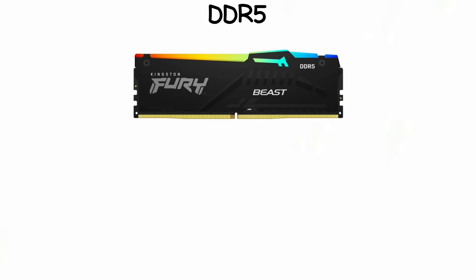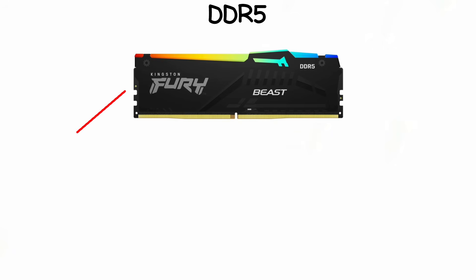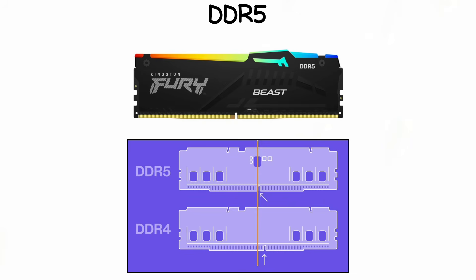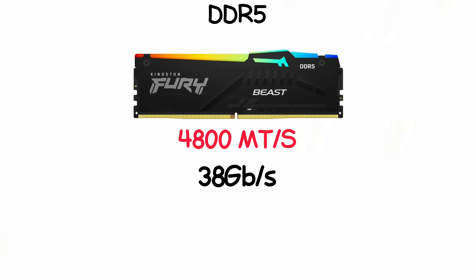DDR5 is the fifth and latest generation of DDR computer memory, launched in 2020, replacing DDR4. It operates at 1.1 volts, and the pin count remained at 288 pins, but the notch shifted again, making it incompatible with DDR4 slots. It delivers faster speeds starting at 4,800 megatransfers per second and bandwidth averaging 38 gigabits.